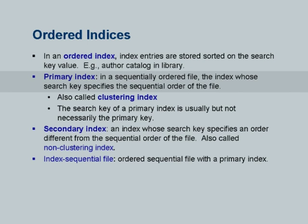There is notation called a primary index, which some people confuse to mean an index on the primary key — it is not. The primary index is essentially for an ordered file: if the file is ordered, the primary index is an index whose search key specifies the sequential order for that file. So if the file is sorted on student ID, an index on student ID is a primary index. An index on student name would be called a secondary index.